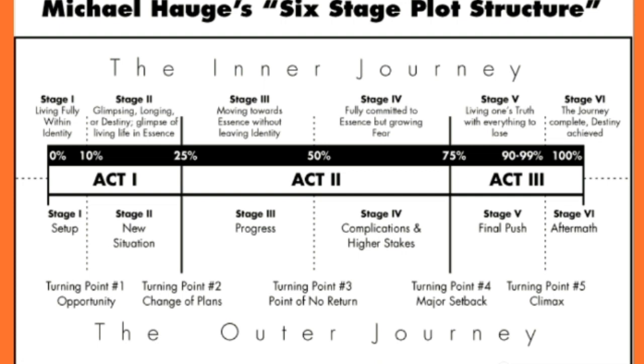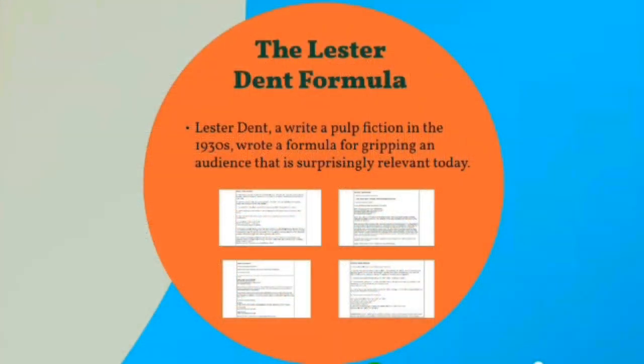This paradigm is interesting because above the structure we can see notes relating to the hero's inner journey — the change he goes through internally, which is normally not shown in the structure of a movie script. The modern movie structure is surprisingly similar to a formula produced in the 1930s by a pulp fiction author named Lester Dent. Lester Dent specified for each 1,500 words of a 6,000 word story exactly what should happen. You can download the complete formula in the resources section of this lecture.